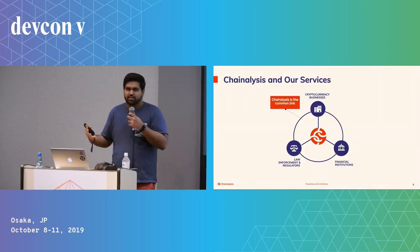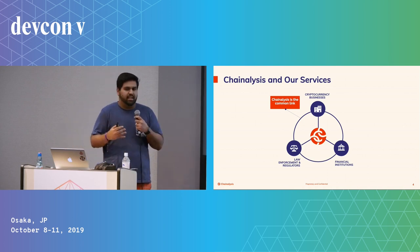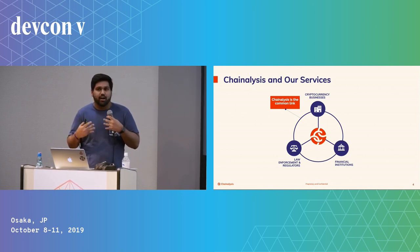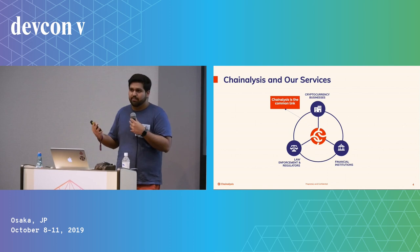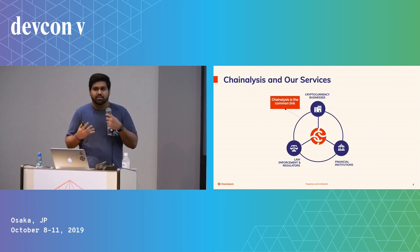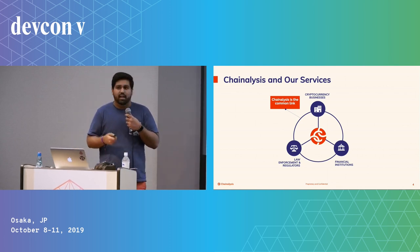What does Chainalysis do and what services do we provide? We're really trying to build trust in the conventional ecosystem — our work is about integrating crypto companies into the existing ecosystem. We work with three major parts: the cryptocurrency businesses themselves, financial institutions, as well as law enforcement and regulators.